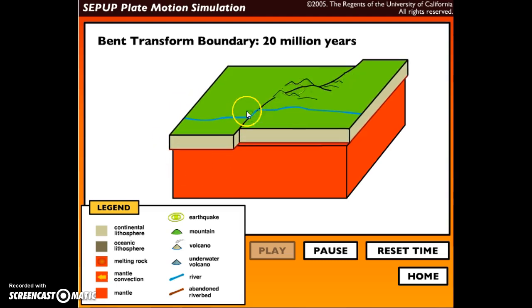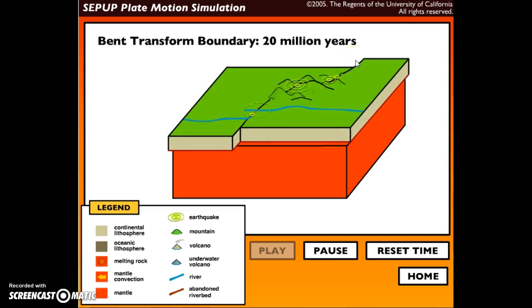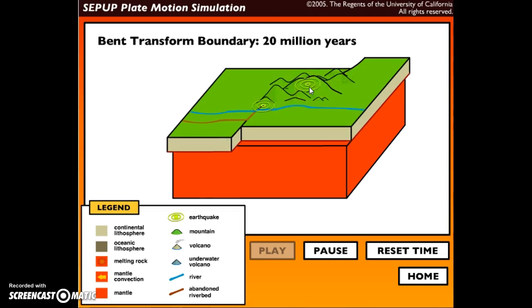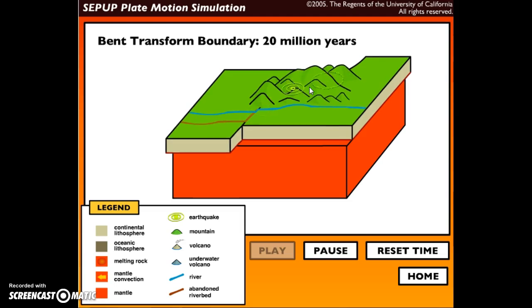Along that boundary line that's bent, we have lots of earthquakes. These mountains are sure growing because as they're colliding, that crust is being pushed upward because there's no space to go. An abandoned riverbed was formed because this edge of the river no longer matches with this edge, but a new riverbed was also formed.